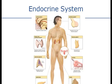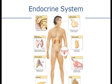Glucagon raises blood sugar in your body and insulin lowers blood sugar. With the male reproductive system, you have the testicles which regulate the male reproductive system through the production of sperm, semen, and testosterone.